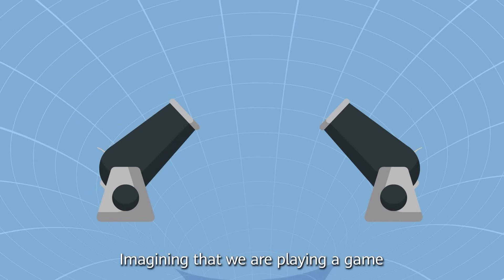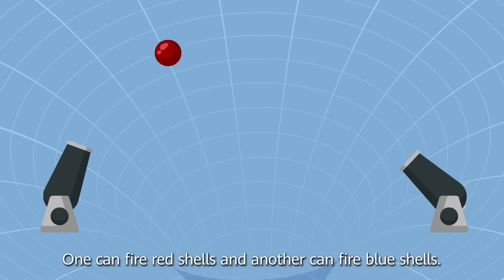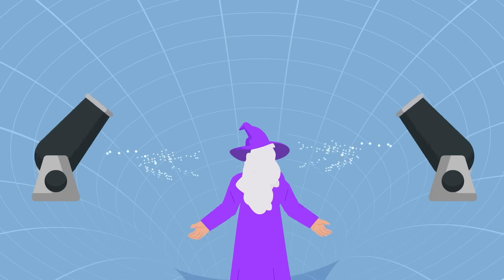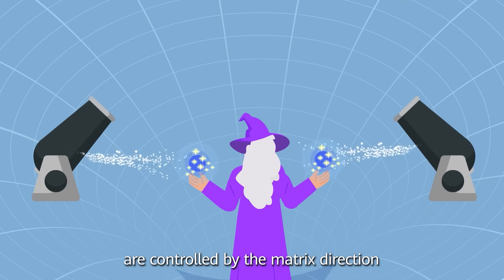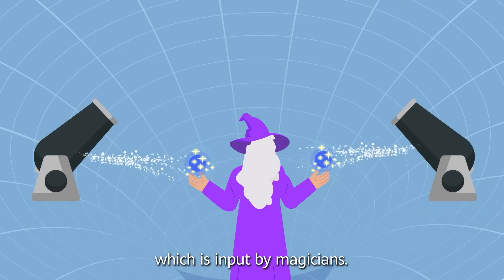Imagine that we are playing a game in high-dimensional space. There are two cannons. One can fire red shells, and another can fire blue shells. The spatial direction for both cannons are controlled by the matrix direction, which is input by magicians.